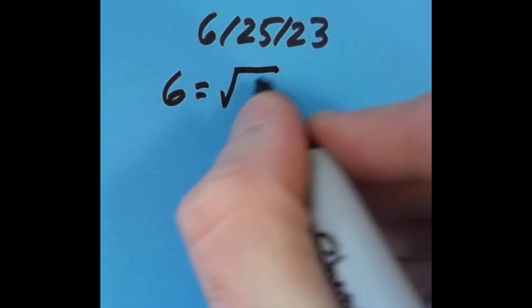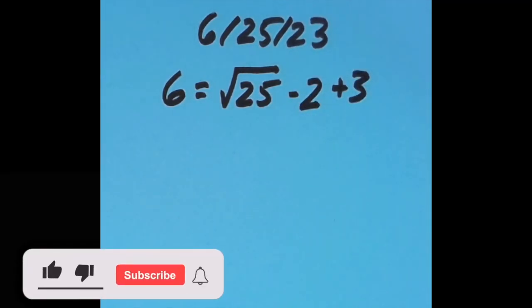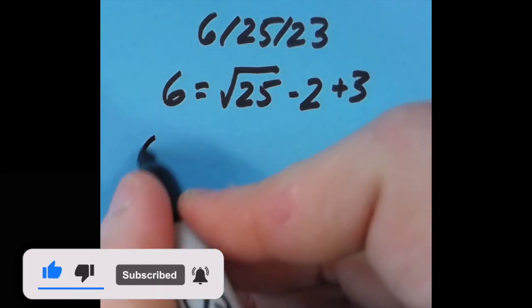What I did was 6 equals, then I'm going to take the square root of 25 to get 5. 5 minus 2 is 3, and 3 plus 3 is 6. So that's what I did, but I tried it some other ways with the equal sign in different spots.